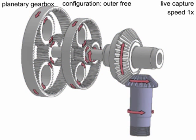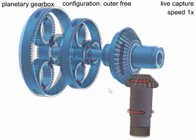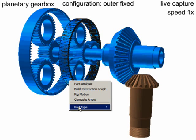The same assembly can behave differently depending on the constraints on its parts. In this configuration, the user fixes the outer rings.